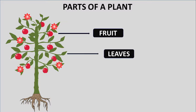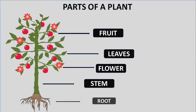Fruit, leaves, flower, stem and root—these are all parts of a plant.